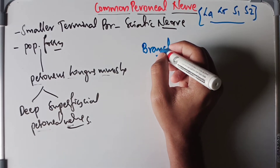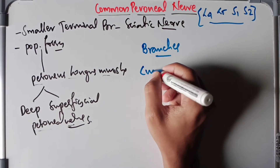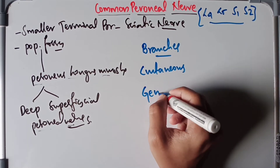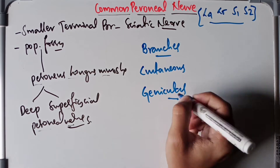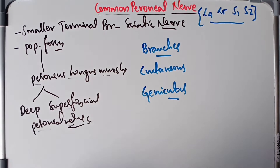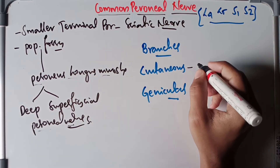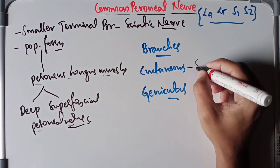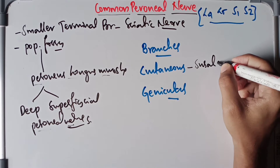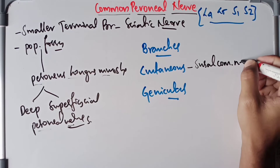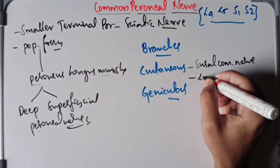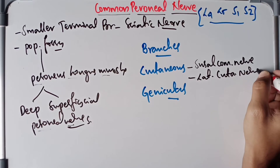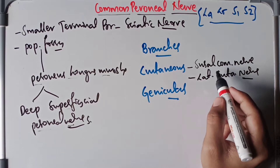The common peroneal nerve is going to give cutaneous branches as well as genicular branches. When it comes to the cutaneous branches, it gives one nerve called the sural communicating nerve and another nerve called the lateral cutaneous nerve. These are the two cutaneous branches of the common peroneal nerve.